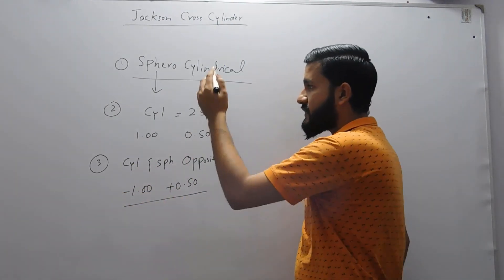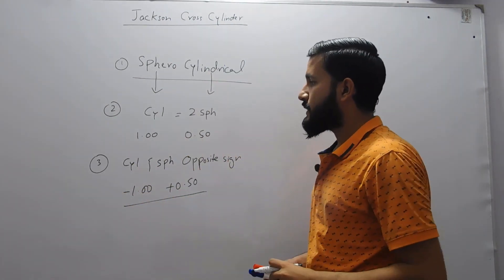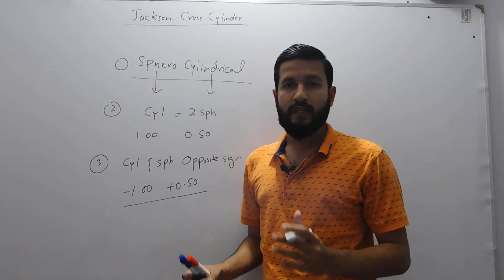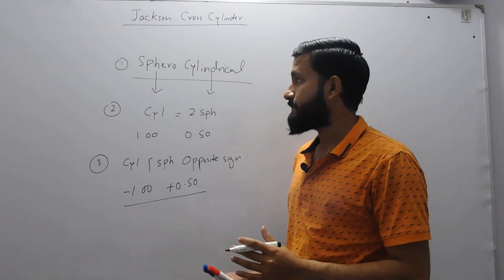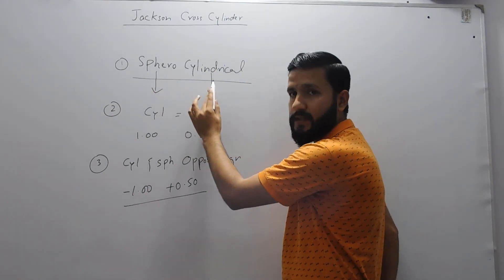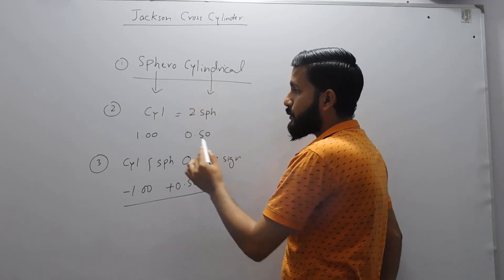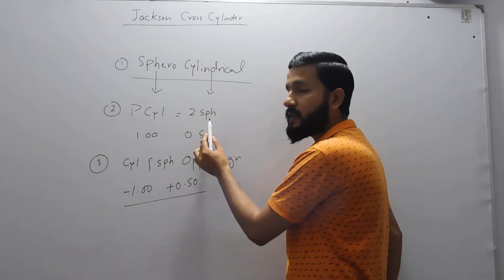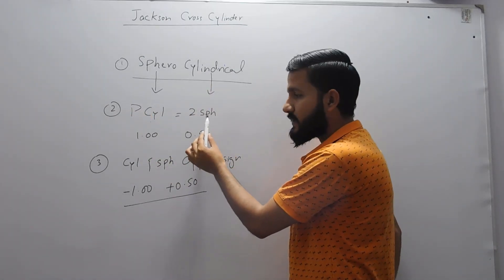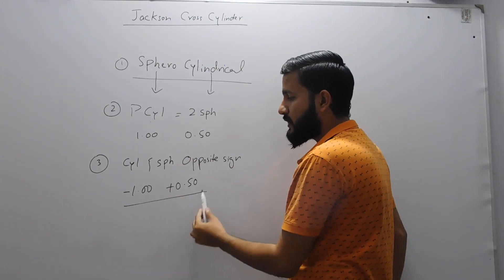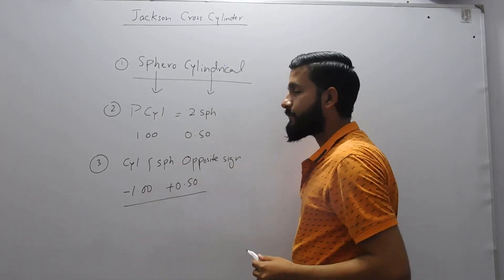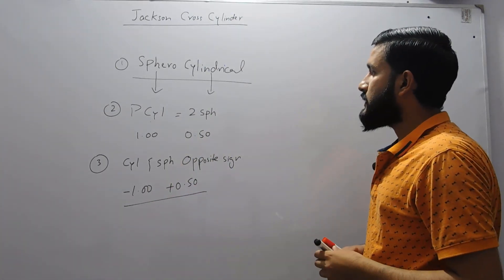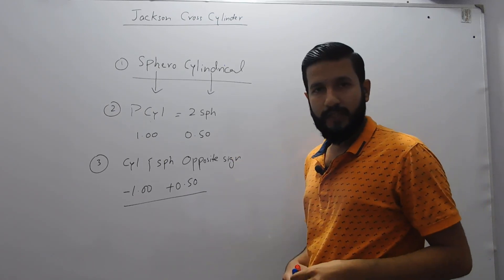If the sphere is plus 0.50 then the cylinder will be minus 1. So these three points complete the definition of Jackson Cross Cylinder: it is a sphero-cylindrical lens in which the power of the cylindrical lens is double that of the spherical lens and is of opposite sign.